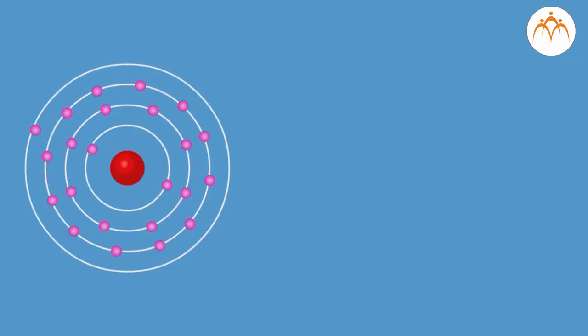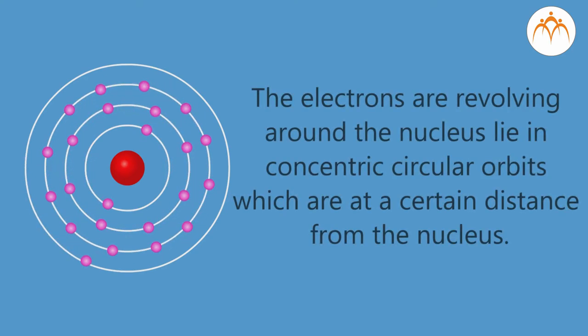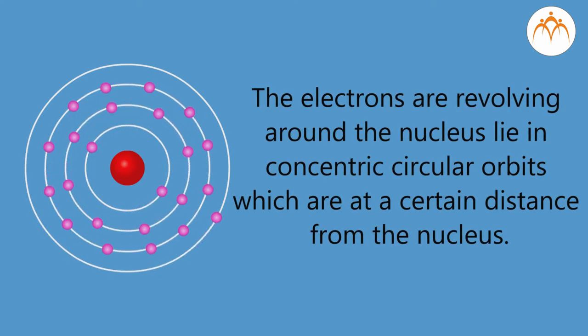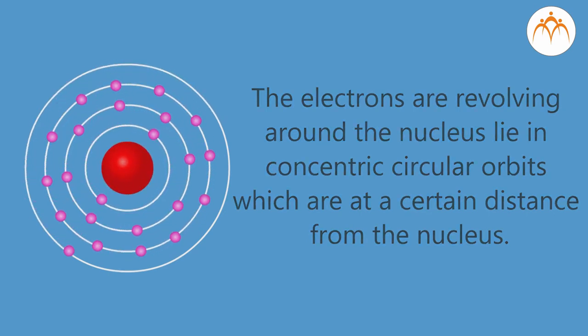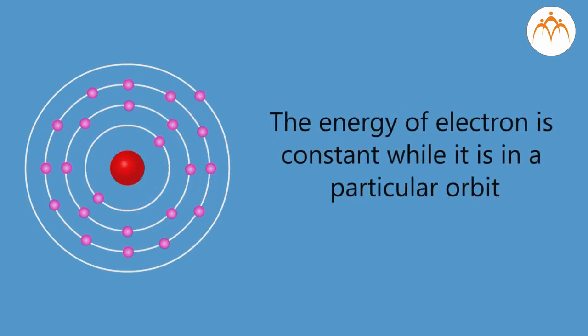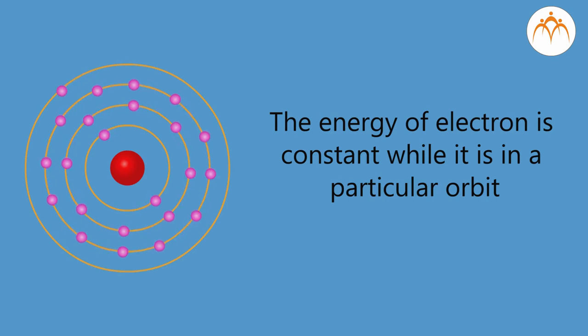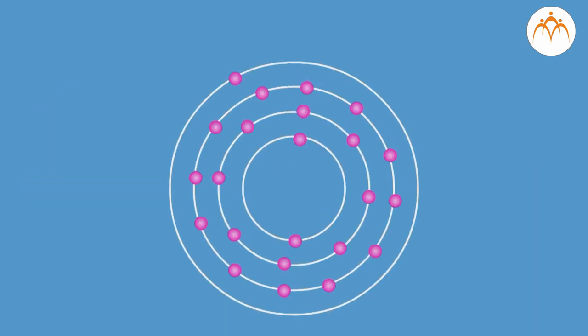His postulates were: First postulate - the electrons revolving around the nucleus lie in concentric circular orbits which are at a certain distance from the nucleus. Second postulate - the energy of an electron is constant while it is in a particular orbit.